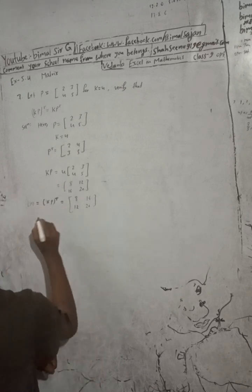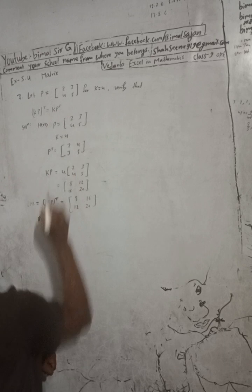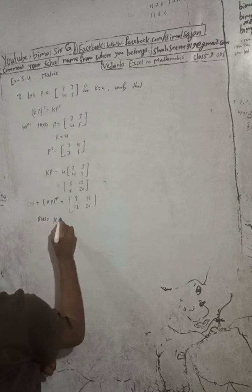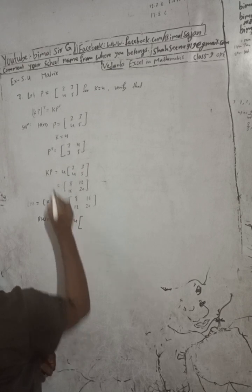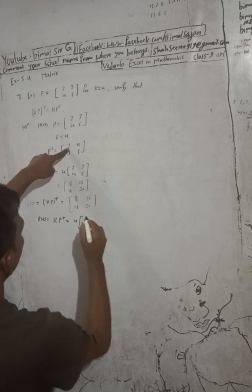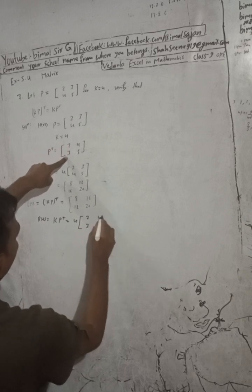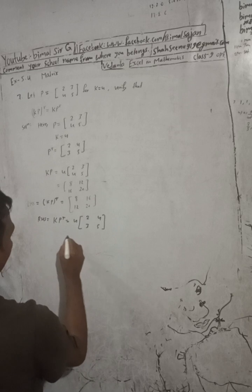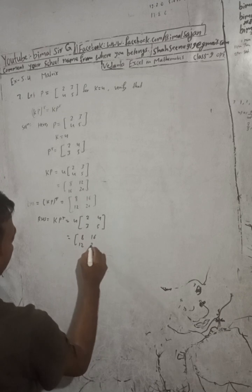Now RHS is equal to K times P transpose. K value is 4 and P transpose is [2, 4; 3, 5]. Multiply: 4 × 2 = 8, 4 × 4 = 16, 4 × 3 = 12, 4 × 5 = 20. So RHS equals [8, 16; 12, 20].